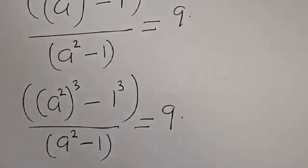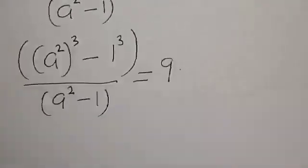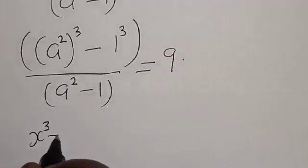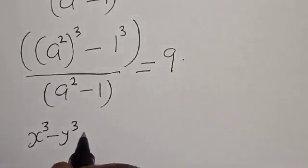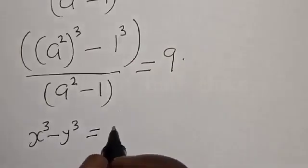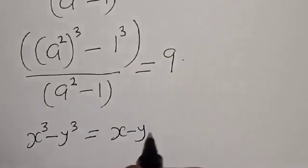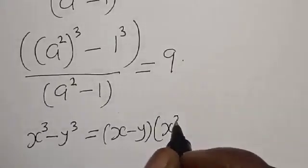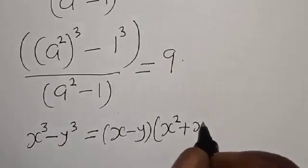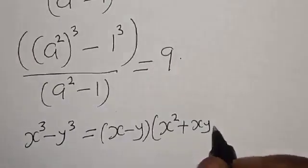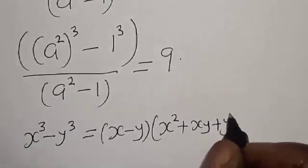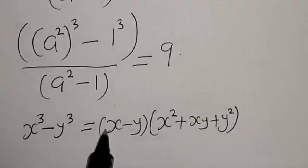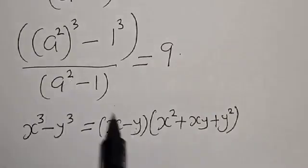Now remember this expression: if you have x cubed minus y cubed, it is the same thing as (x minus y) multiplied by (x squared plus xy plus y squared), where x is equal to a squared and y is equal to 1.